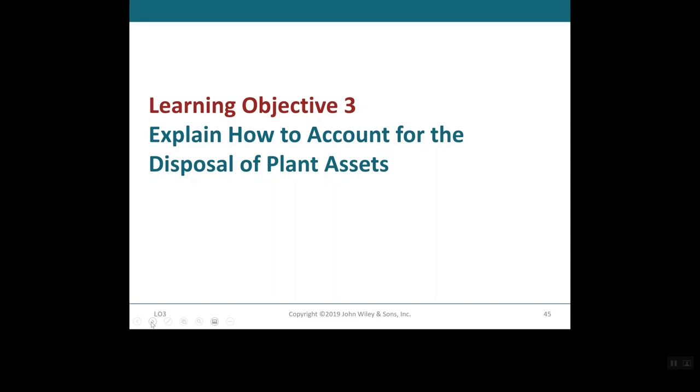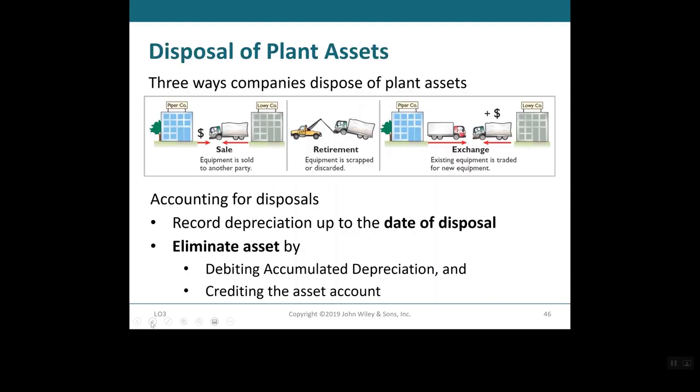Welcome to Learning Objective 3. Here we're going to explain how to account for the disposal of plant assets. Companies dispose of plant assets that are no longer useful to them. They can dispose of these assets in three major ways: they could sell it — that's selling the equipment to another party; it could be retired, where equipment is discarded as scrap; or it could be exchanged, whereby you exchange the equipment for new equipment.